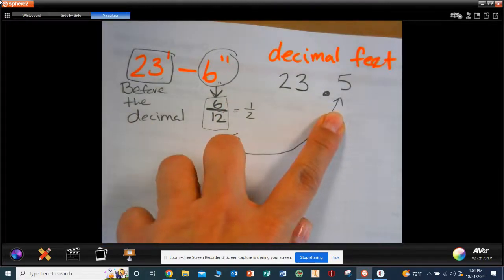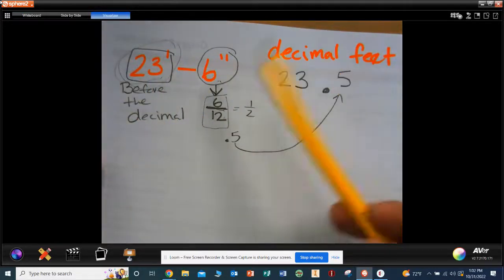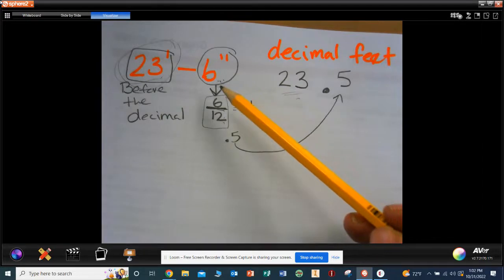So 23 feet 6 inches is equal to 23.5. You don't do any math with the first number. The first number just stays put. This number you put it over 12. Is it always going to be 12, Nathan? Yes, it's always going to be 12 because it's inches. How many inches in a foot? 12.